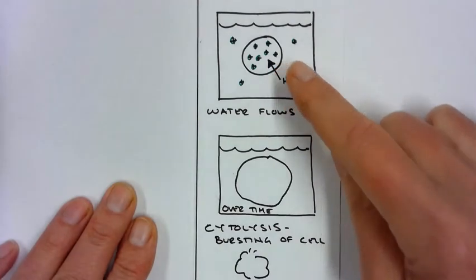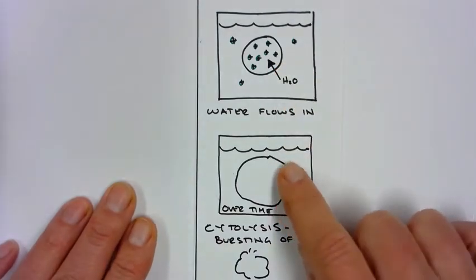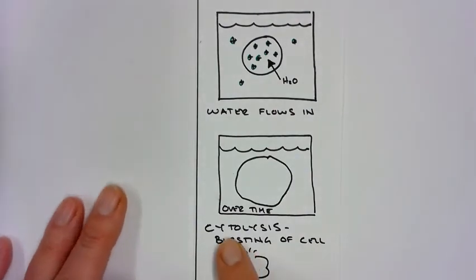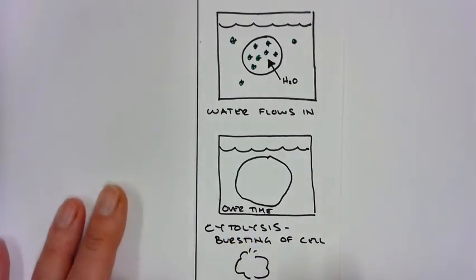So water flows in. Over time, our cell will swell up, and it can even swell to the point of bursting. This bursting is called cytolysis, bursting of the cell.